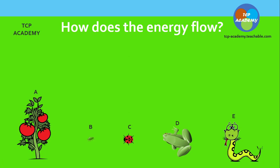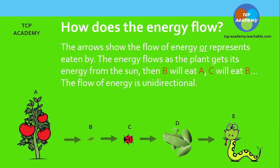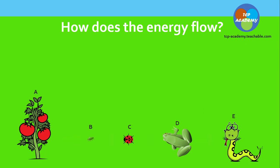How does the energy flow? The arrows show the flow of energy. The plant gets its energy from the sun — plants are autotrophic organisms, so they are able to convert light energy into chemical energy, which is passed along the food chain. The tomato plant converts energy from the sun into chemical energy. Then organism B, which is the aphid, takes energy from the plant by eating it. Then it will be eaten by C, C will be eaten by D, and D will be eaten by E, which is the snake.